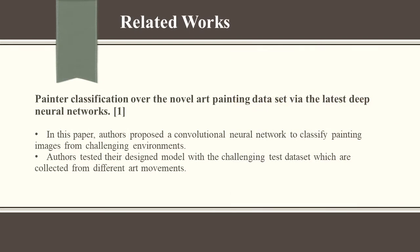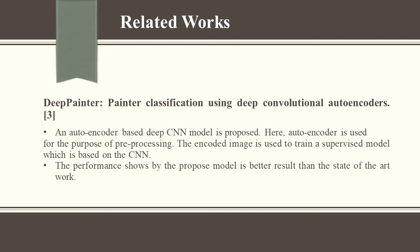Related Work: In the paper on painter classification over a novel art painting dataset via the latest deep neural networks, authors proposed a convolutional neural network to classify painting images from challenging environments. Authors tested their design models with a challenging test dataset collected from different art movements. In the Deep Painter paper on painter classification using deep convolutional autoencoders, they described the problem of painter classification and proposed an autoencoder-based deep CNN model. The results showed that the proposed model is better than the state of the art.